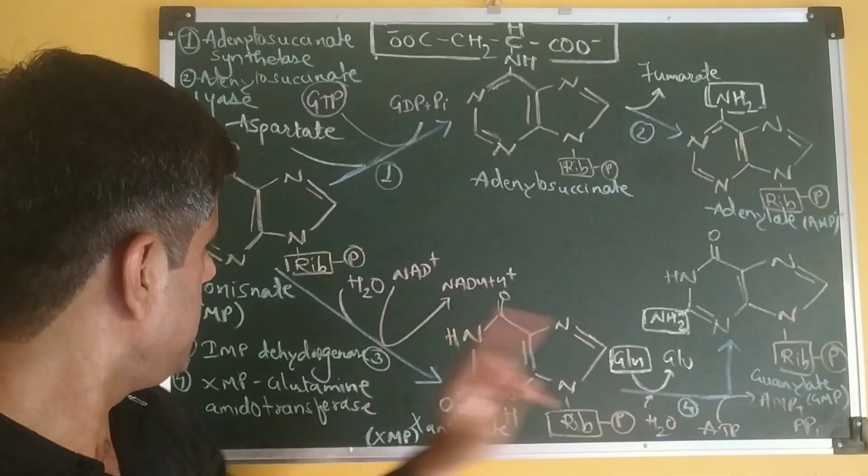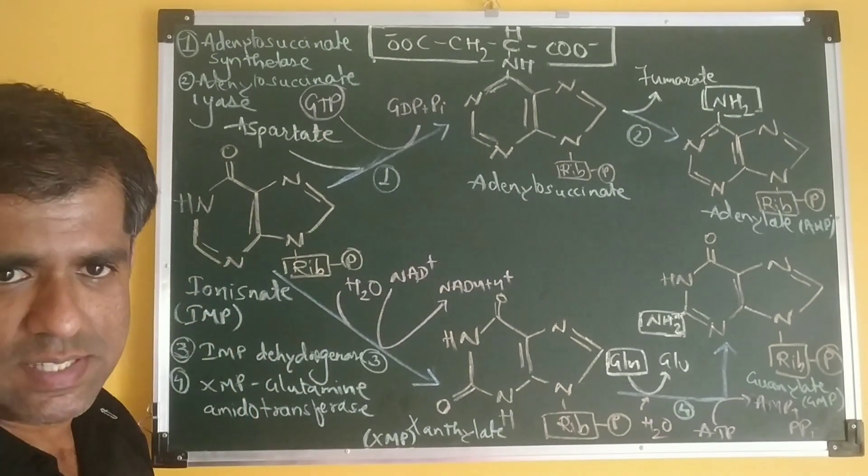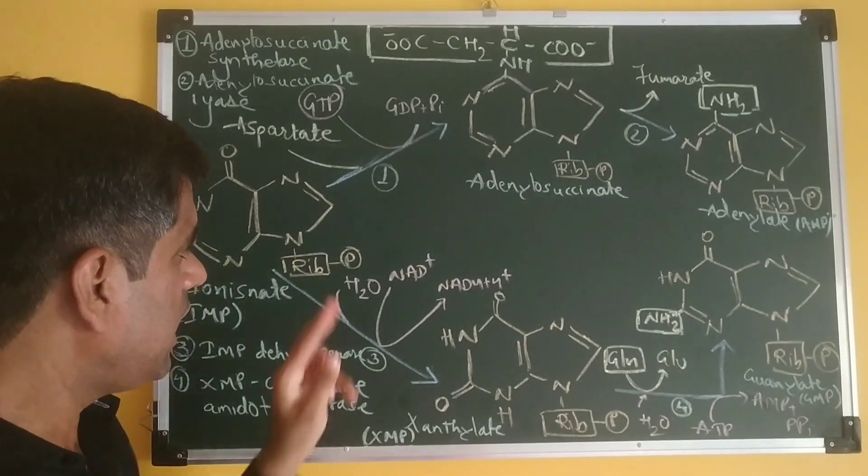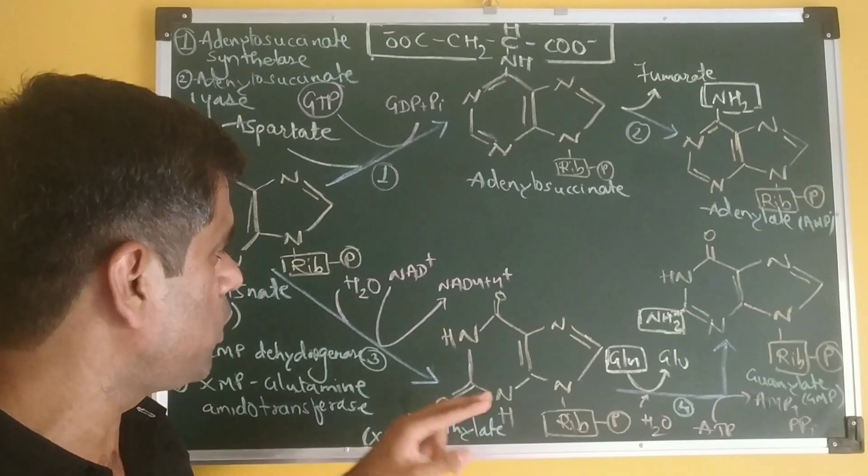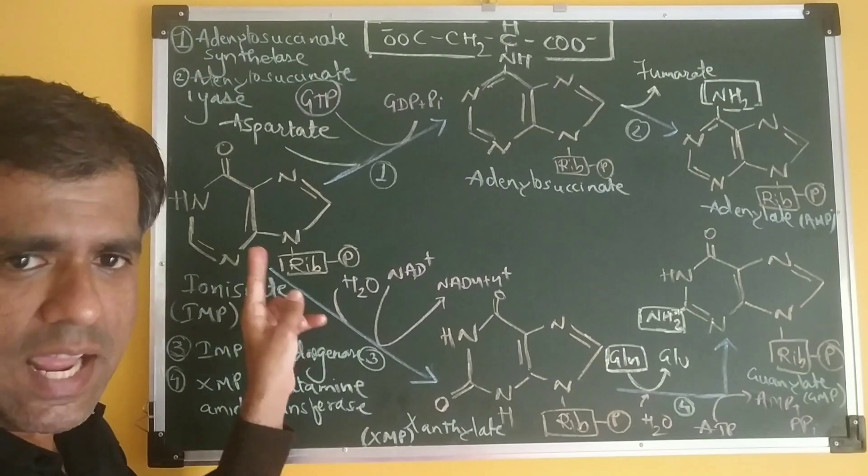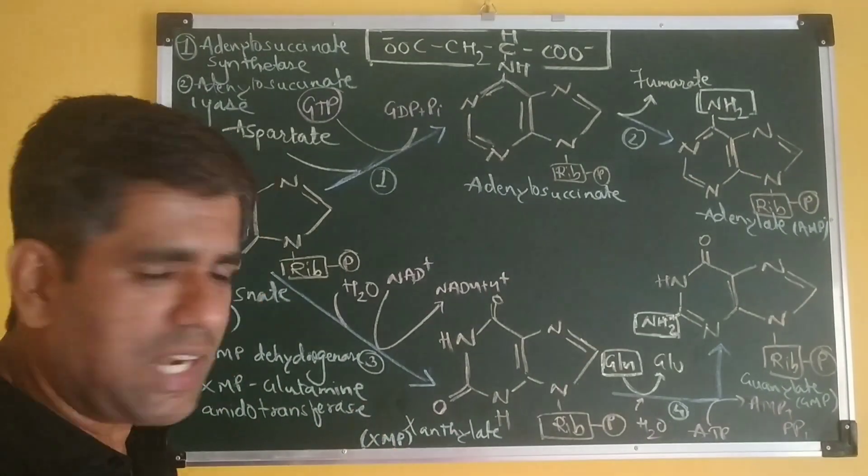For the formation of GMP from IMP, the first step is catalyzed by IMP dehydrogenase. This enzyme catalyzes the oxidation of inosinate, where NAD+ acts as the electron acceptor. NAD+ is converted to NADH + H+, and IMP or inosinate is oxidized to form xanthanylate or the intermediate XMP.